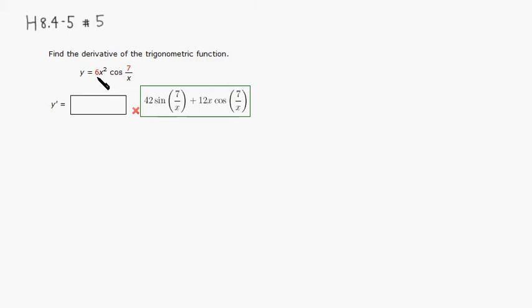There's a 6, so that's just a constant multiple. I'm going to leave that alone, but there are two things multiplied together, so we're going to have to use the product rule. Let's take the derivative.